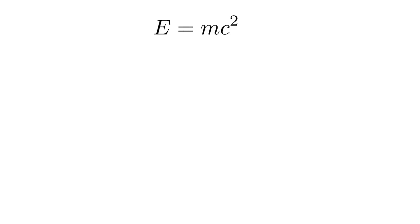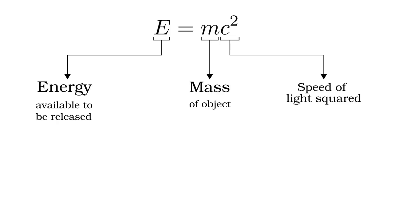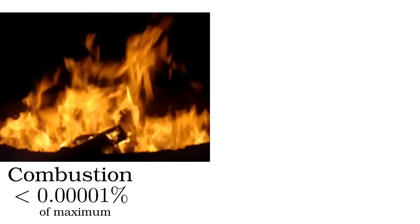That is what Einstein's famous equation E equals MC squared means. The most energy that can be extracted from a parcel of matter is its mass times the speed of light squared, and that's just the theoretical maximum.